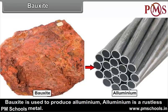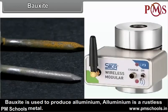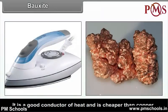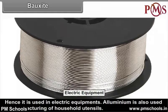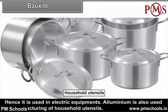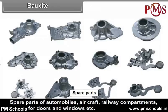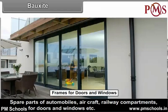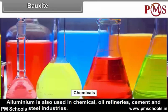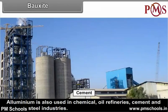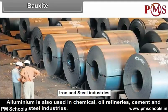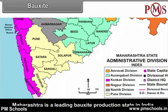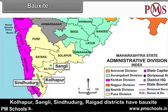Bauxite. Bauxite is used to produce aluminium. Aluminium is a rustless and light metal; it is a good conductor of heat and is cheaper than copper, hence it is used in electric equipment. Aluminium is also used in manufacturing of household utensils, spare parts of automobiles, aircraft, railway compartments, frames for doors and windows, etc. It is also used in chemical, oil refineries, cement, and iron and steel industries. Maharashtra is the leading bauxite-producing state in India. Kolhapur, Sangli, Sindhudurg, and Raigad districts have bauxite deposits.